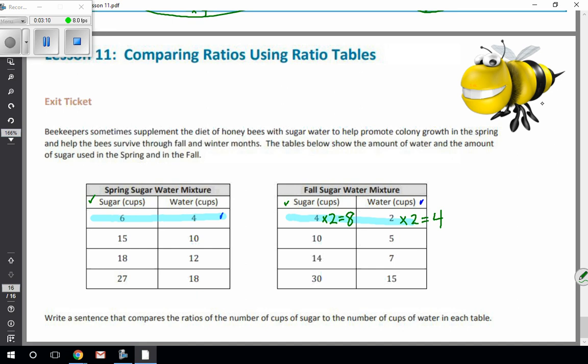Once again, the other way that I could find it is I can go ahead and find the unit ratio or the value of the ratio in that chart. So I know that this entire chart here, all of these ratios are equal. What do they all have in common? The simplified or the value of this ratio is 3 to 2.